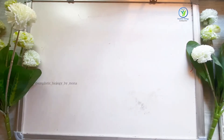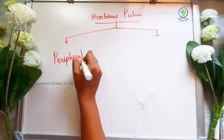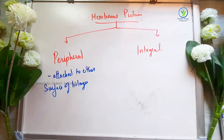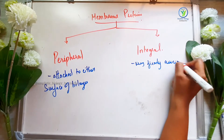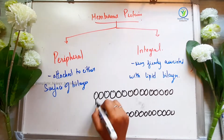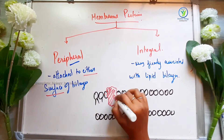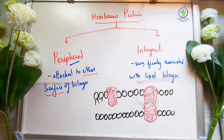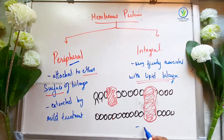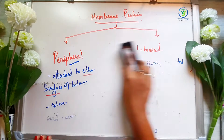Membrane proteins in the plasma membrane are divided into two types based on their association: peripheral and integral. Peripheral membrane protein is attached to the surface of the bilayer. Integral membrane protein is present throughout the total lipid bilayer. Peripheral protein can attach to either surface of the bilayer. Peripheral protein is not easy to extract with mild treatment. If it is an integral protein, you can use agents like detergent to extract it.